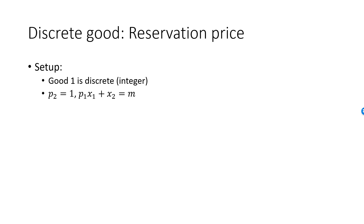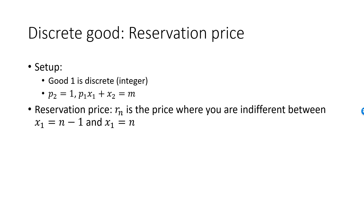Let's introduce a new concept called reservation prices. With well-behaved preferences, there will be a price where a consumer will be indifferent between consuming 0 units of good 1 and 1 unit of good 1. This price will be called reservation price 1, and it will be denoted by R1.